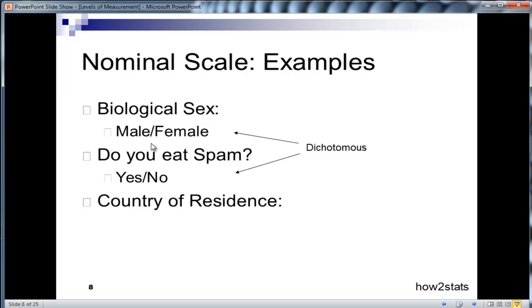Country of residence is a nominal scale that could, and usually does, have more than two levels in it. So we have United States, Canada, United Kingdom, Eurovision, etc.